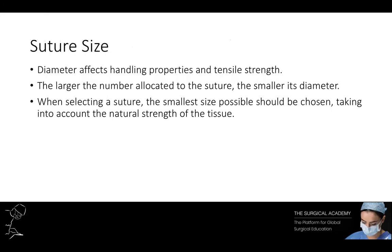The diameter of a suture affects its handling properties and tensile strength. The larger the size number given to the suture, the smaller the diameter. For example, a 7-0 suture is smaller than a 4-0 suture. When choosing your suture size, the smallest size possible should be chosen, taking into account the natural strength of the tissue.